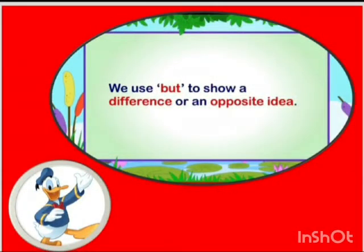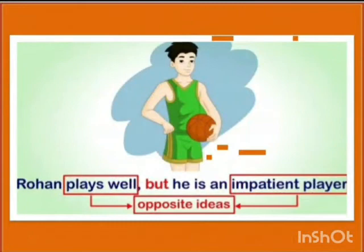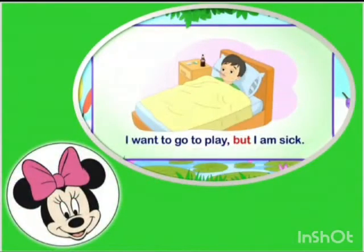We can use 'but' to show a difference or an opposite idea. Let's see how. Rohan plays well but he is an impatient player. Over here, two opposite ideas are shown — Rohan plays well, and also he is an impatient player — so we add the conjunction 'but'. I want to go to play, but I am sick.